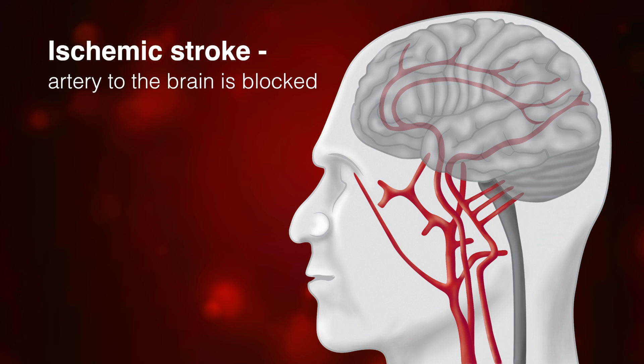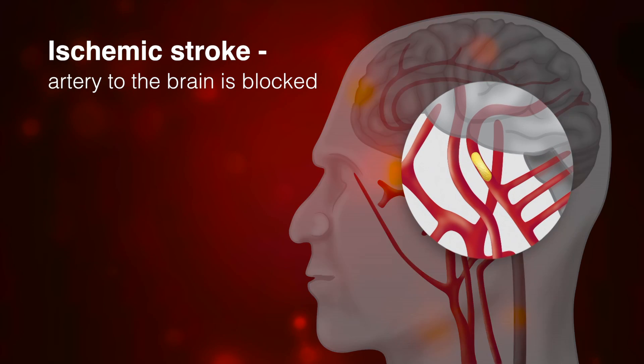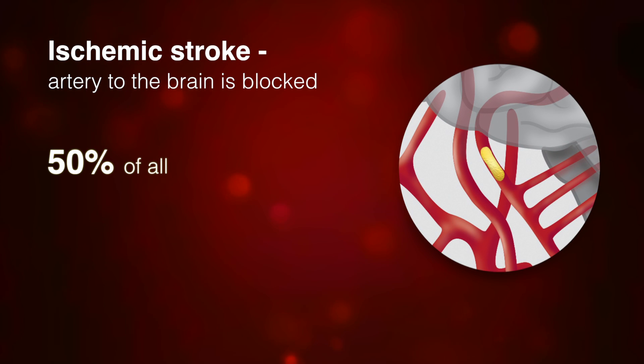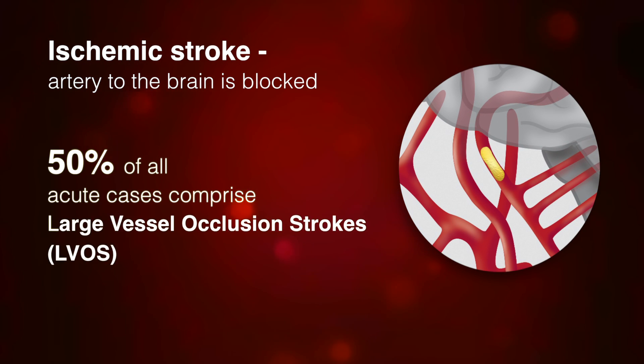Ischemic stroke occurs when an artery to the brain is blocked. About 50% of all acute cases comprise large vessel occlusion strokes, or LVOs. Emerging treatment options like endovascular therapy can dramatically reduce disability and death. However, the first step towards impactful treatment is the need for rapid identification of severe stroke symptoms.